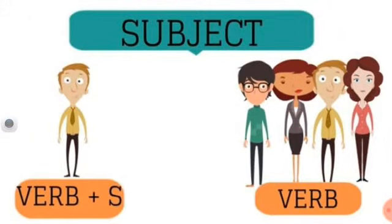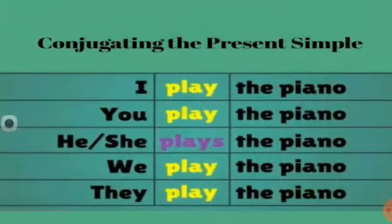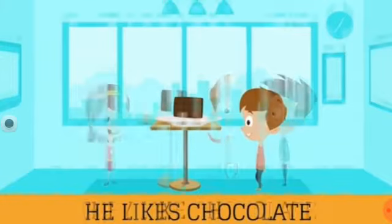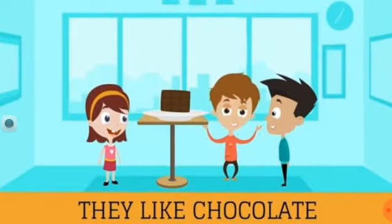If the subject is singular — he, she, it, or any other person — we use S or ES with the first form of the verb. But with plural subjects, we do not add any S or ES. For example, conjugating the present simple: I play the piano, you play the piano, he plays the piano — we add S because he is singular — she plays the piano, we play the piano, they play the piano. Another example: he likes chocolate, because he is singular. They like chocolate, because they is plural, so we do not add S or ES.